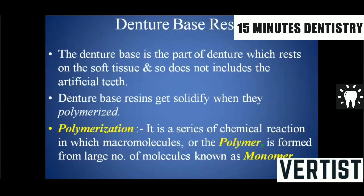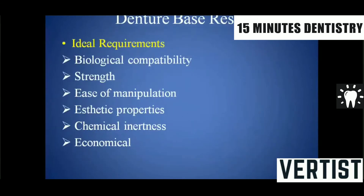The denture base resin gets solidified through polymerization. What is polymerization? Polymerization is a series of chemical reactions in which a macromolecule — a bigger molecule called a polymer — is formed from a large number of small molecules known as monomers. When n number of monomers come together, the polymerization reaction starts and the polymer is formed.